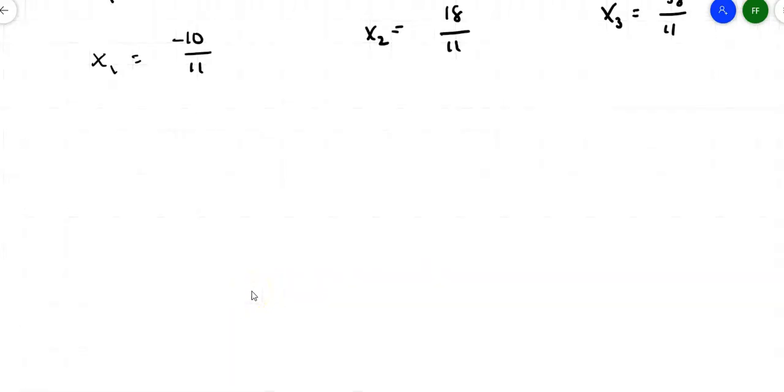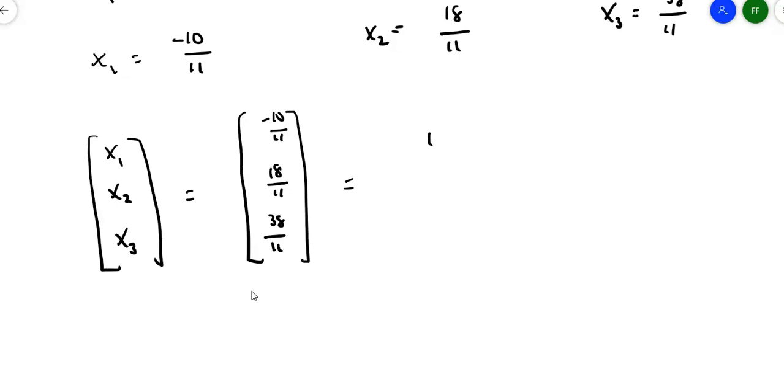So I can write my answer like this. There's my three values there. I can write a column matrix saying X sub 1, X sub 2, X sub 3 equals negative 10 over 11, 18 over 11, 38 over 11. Or if I want, I can actually pull out the 1 over 11, right? Just leave the 1 over 11 on the outside times the matrix negative 10, 18, 38. So those are my three solutions. I will leave it up to you to put those values back in to see if they actually work, but they do actually work. All right. We'll do one more video with the applications for areas.